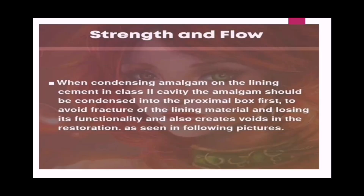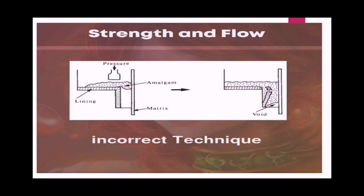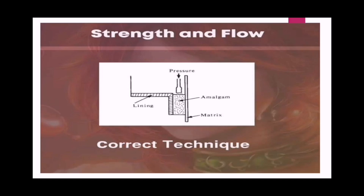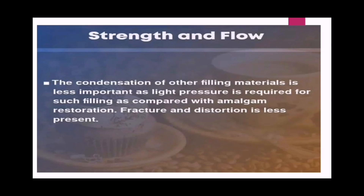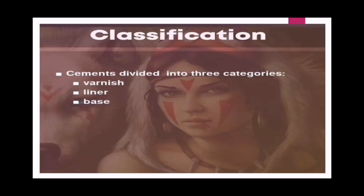When condensing amalgam on the lining cement in a Class 2 cavity, the amalgam should be condensed into the proximal box first to avoid fracture of the lining material and loss of functionality, and also to avoid voids in the restoration, as seen in the following pictures showing incorrect and correct techniques. For other filling materials, fracture and distortion is less of a concern as only light condensation pressure is required.